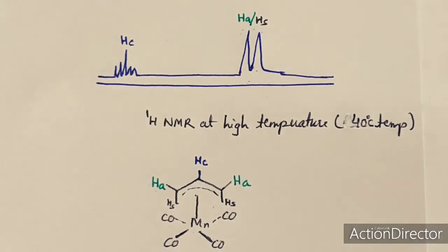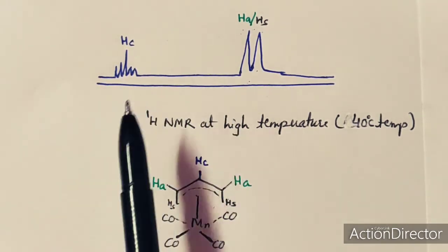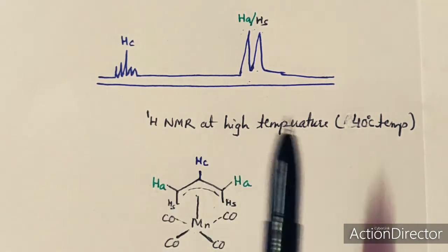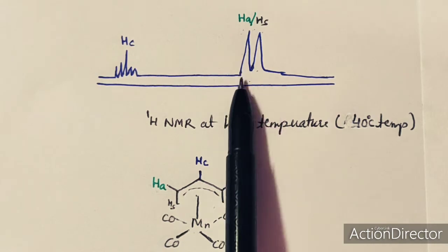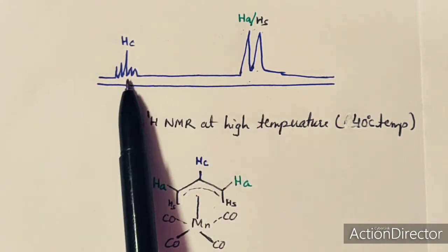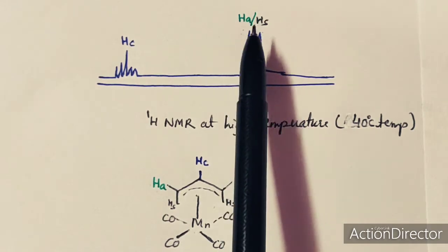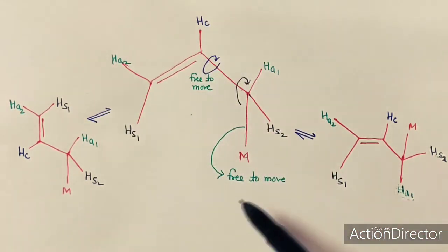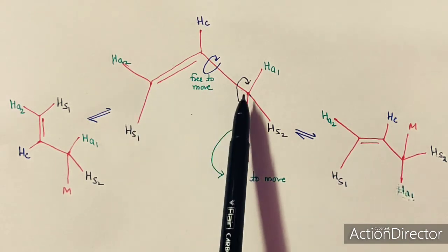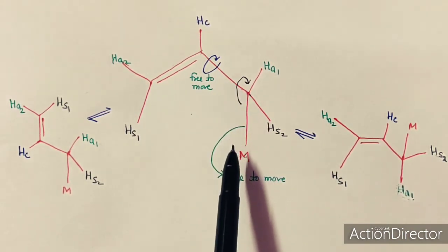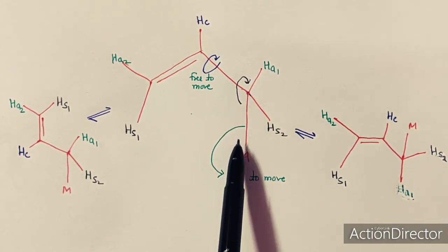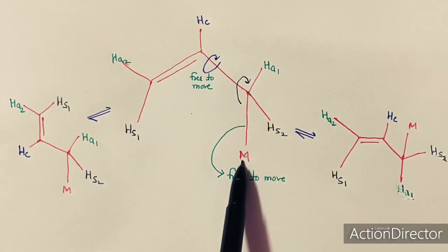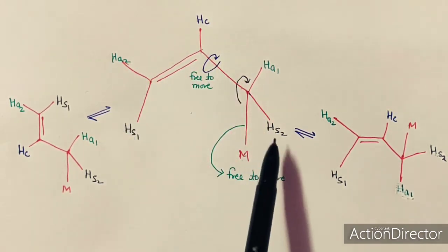In the enlarged 1H NMR spectra at 40 degrees centigrade, there are only two peaks: one for HC and one for all four hydrogen atoms. The change in the peaks is due to the fluxional behavior of the allylic group. This is an allylic group attached to the metal center through Eta-1, that is, through one carbon atom. So there is an Eta-1 interaction and this is an Eta-1 allylic complex.